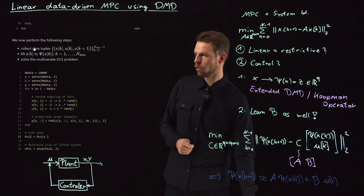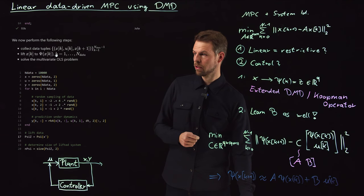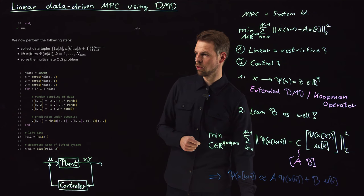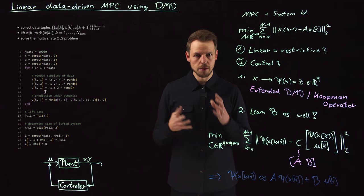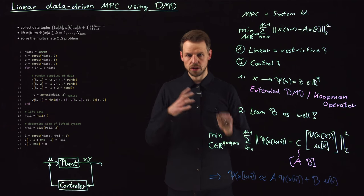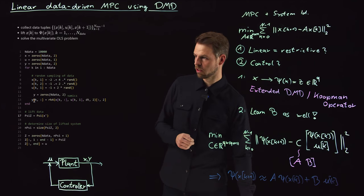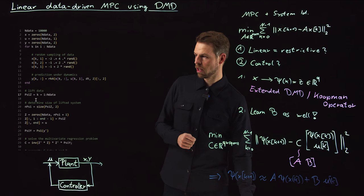So now we perform the following steps. We collect data. We then lift the state data and then we solve the multivariate OLS problem. So 10,000 samples. I randomly sample them from a certain box with random inputs. So IID sampling of my data. And then the associated output. So the next time step, which I'm denoting as Y here, is just predicting forward at the randomly drawn X and U. And this gives me the two bits I want to have.